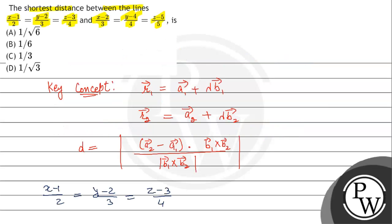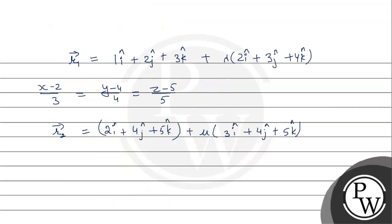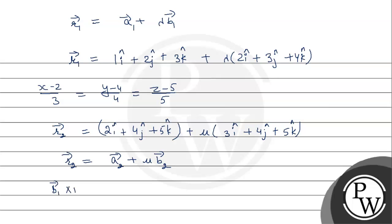Now for the shortest distance, first let's find B1 cross B2. R1 is in the form A1 vector + λ·B1 vector and R2 is A2 vector + μ·B2 vector. So B1 cross B2 is the determinant with i cap, j cap, k cap, then values 2, 3, 4, and next row 3, 4, 5.